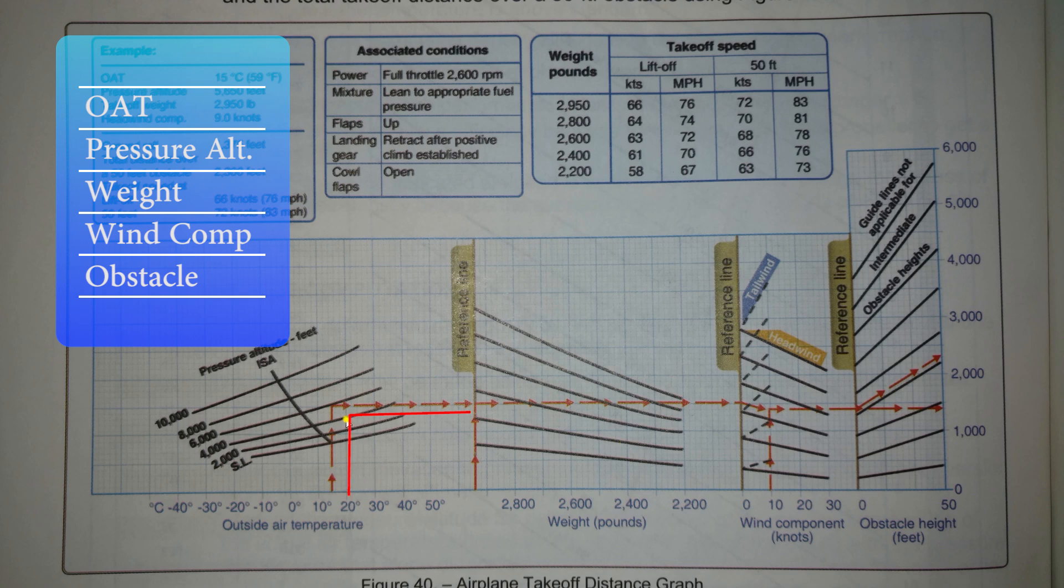Again, 20 degrees to 4,000, straight across. We hit just above this black reference line. We come down to 2,400, we'll be just above it, and then we move straight across from there.